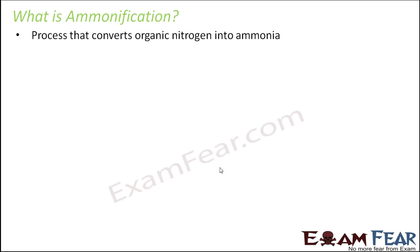So why do we need ammonification? In ammonification we are not converting the atmospheric nitrogen to ammonia — we are converting the organic nitrogen. Atmospheric nitrogen is the gaseous form of nitrogen which is present in the atmosphere. To convert atmospheric nitrogen to ammonia, nitrogen fixation is the helpful process.